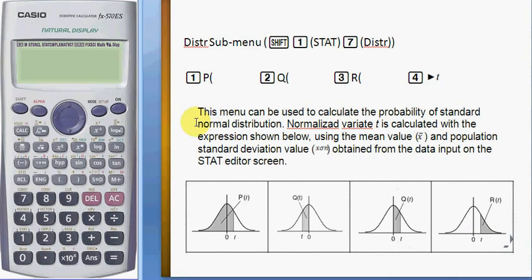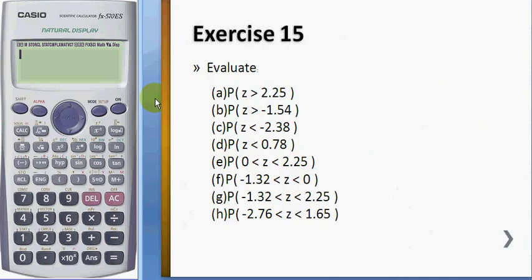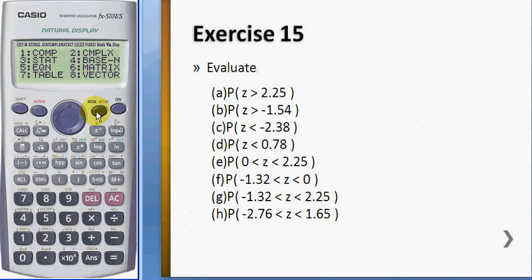Okay, so we go back to the question. For the first question, we will use R. So to call the P, Q and R, you have to go into the stat mode, number 3, and one variable, and you press AC.